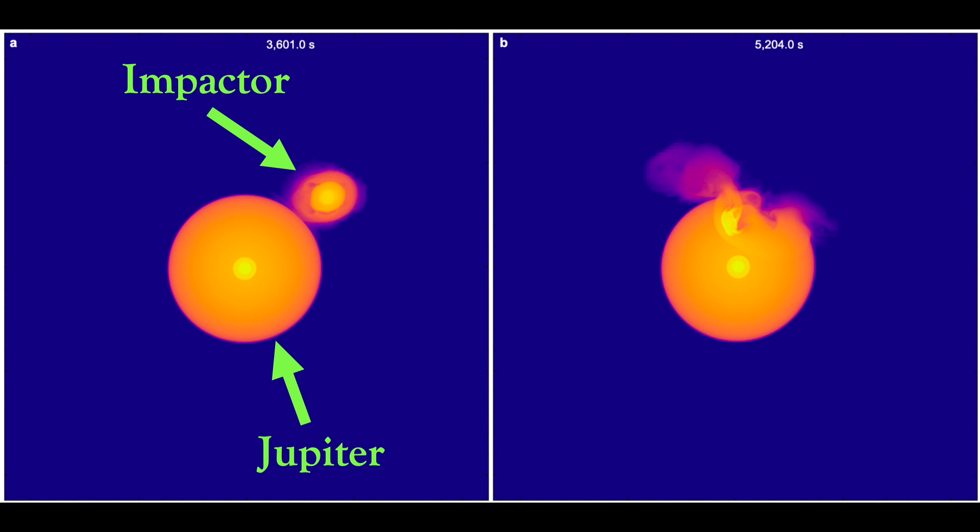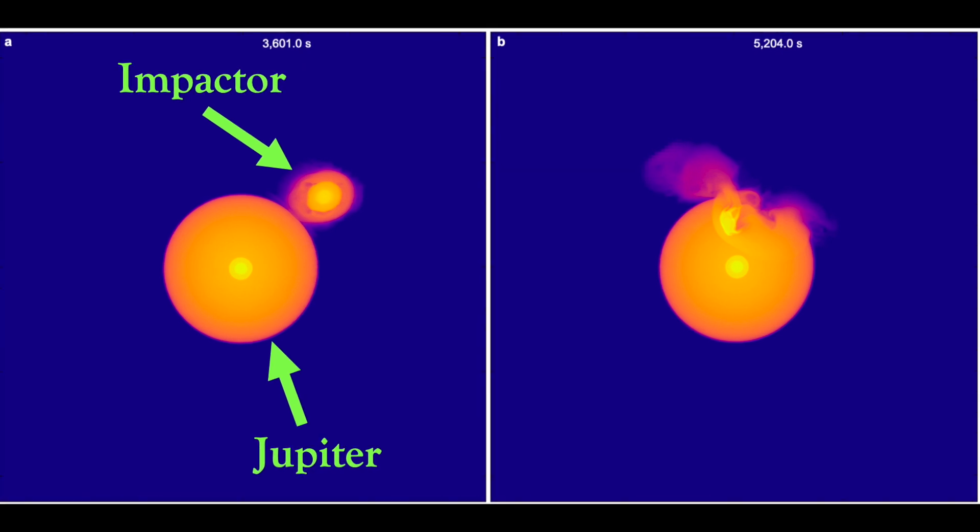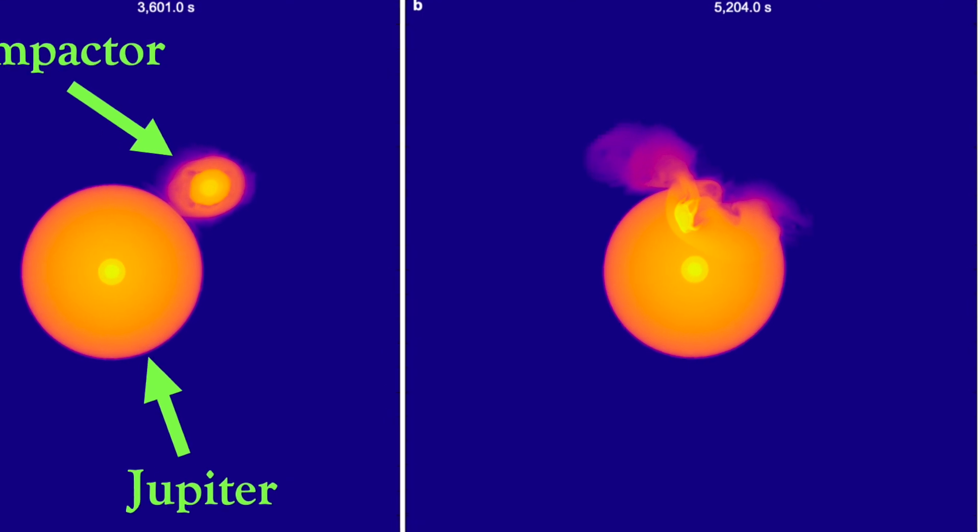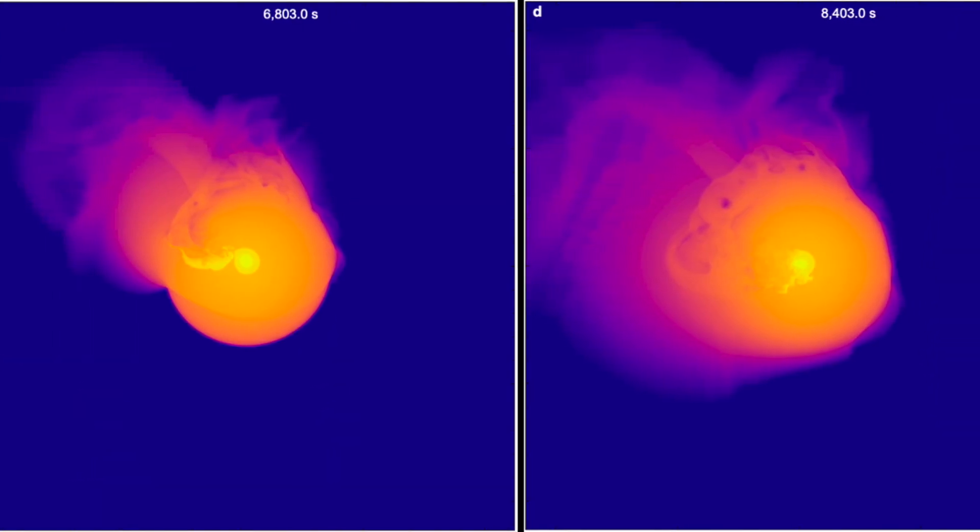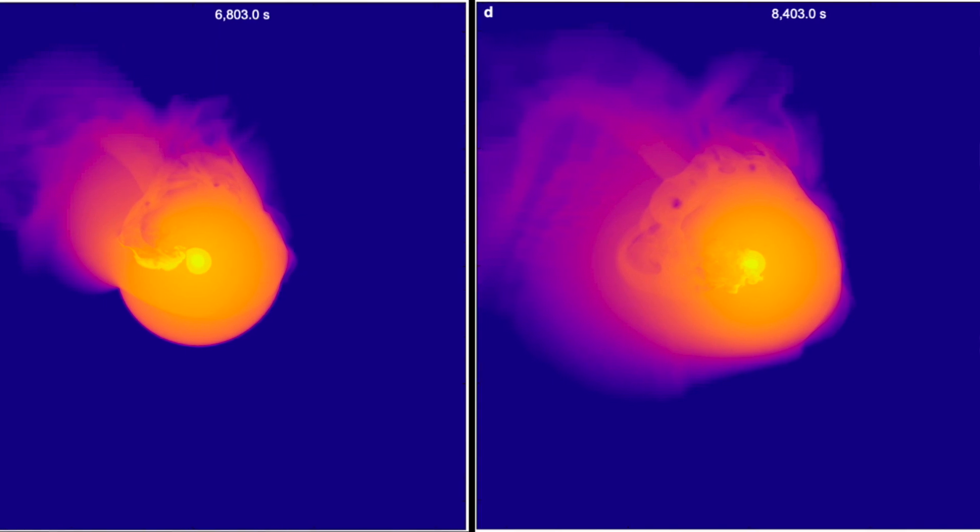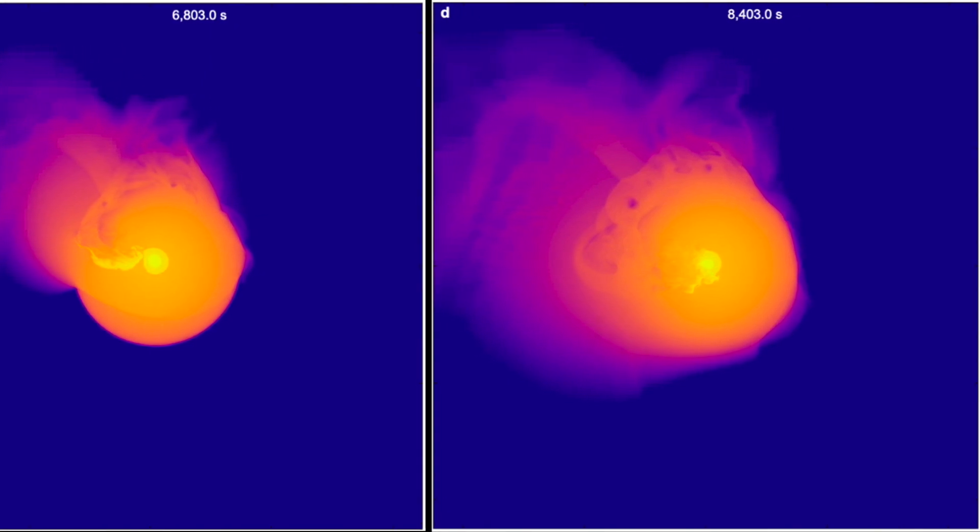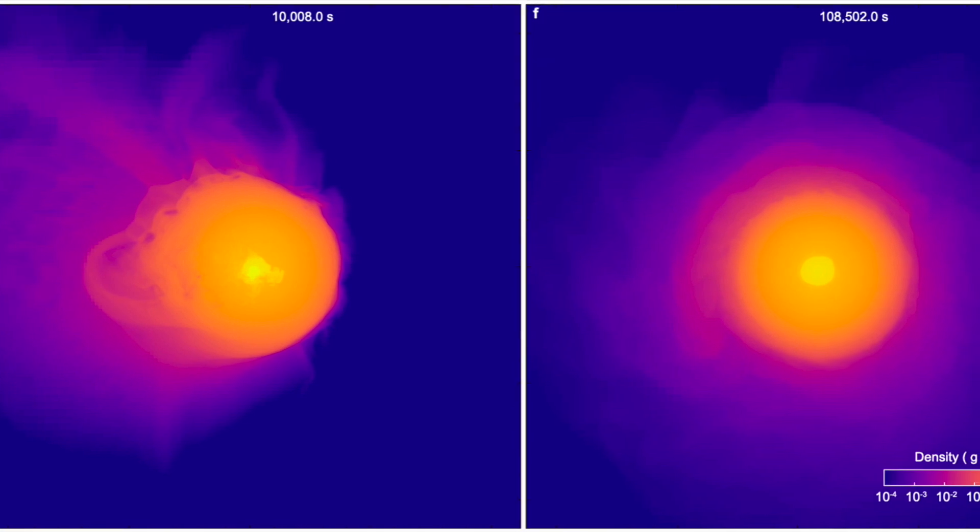Here we can see snapshots of their simulations showing the collisional process. The colors relate to the density, with the densest region shown in bright yellow. We can see the accretion process, the effect on the central core, and what remains after only around 30 hours from the initial post-impact.